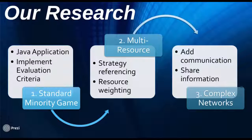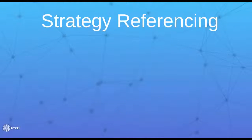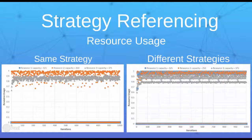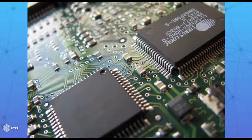We studied how varying game parameters affect system behavior. In our research with multiple resources, we investigated agents' use of strategies by looking at usage of resources of varying capacity. We found that when agents reference one of their strategies to make each resource decision, it is difficult to obtain every resource. However, when different strategies may be used, they have a much higher chance of success. This is important when agents need simultaneous resource access, such as when processes in distributed systems compete for CPUs, RAM, and channels.